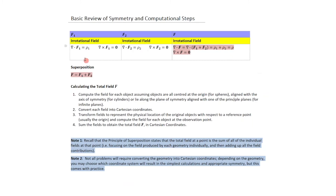As a quick review: if you have a field F1 due to rho1 and a field F2 due to rho2, you sum the two fields due to the contributions of rho1 and rho2. This is just stating the principle of superposition.